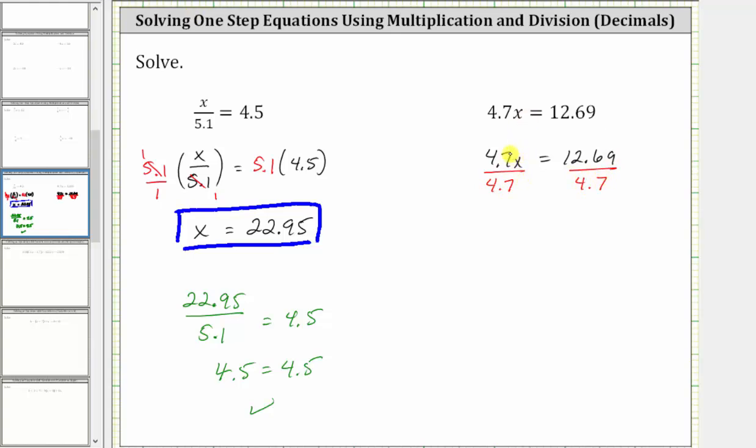On the left side of the equation, 4.7 divided by 4.7 simplifies to one, leaving us with one times x, which is x. And now on the right, we need to find this quotient. Let's go ahead and do this below. We begin by making the divisor a whole number by moving the decimal point one place to the right. And now we do the same in the dividend.